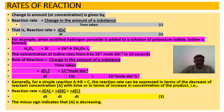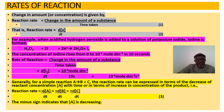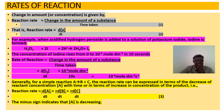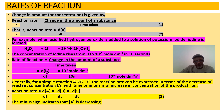Once the reaction starts, reactant concentration decreases while product concentration increases. For reactants, we include a negative sign in the rate expression to keep the rate positive, since the final concentration is smaller than the initial. For products, the sign is positive. So: rate = −Δ[A]/Δt = +Δ[B]/Δt = +Δ[C]/Δt.